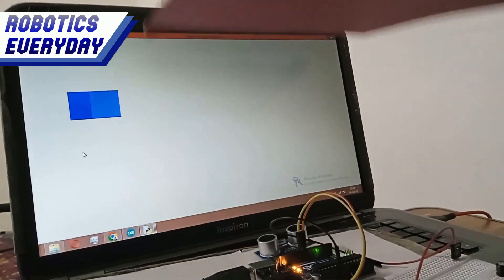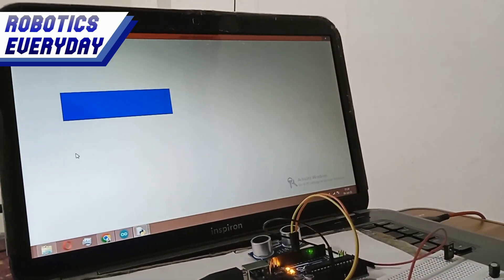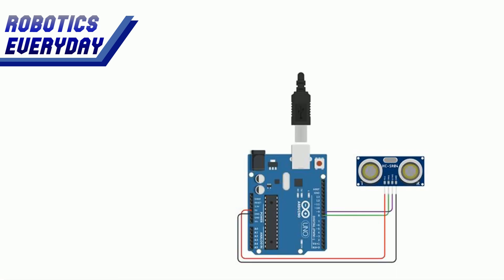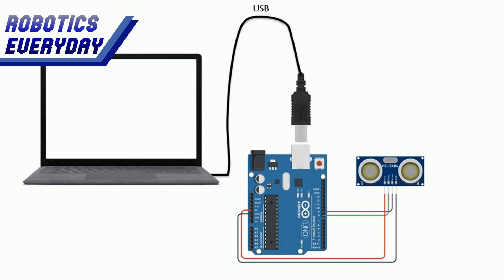Let's understand the concept of how this visualizer is working. The ultrasonic sensor is sending its time of flight to Arduino Uno. The Arduino Uno is doing the distance calculations and converting it to distance. The distance is then sent to the computer serially via USB cable. There is Python code running on the computer which visualizes or graphically plots the readings received.